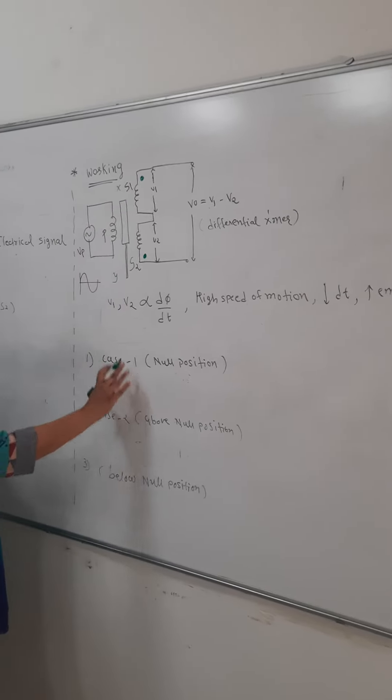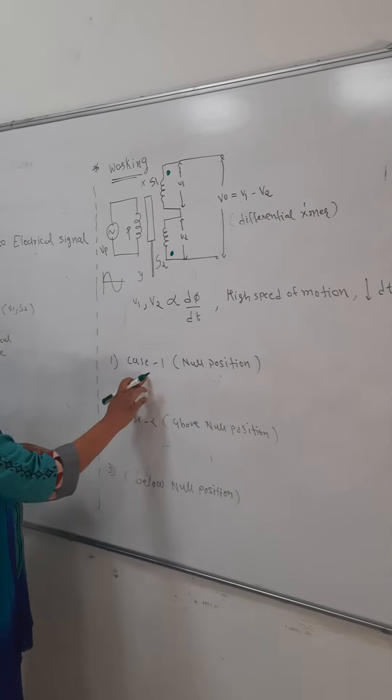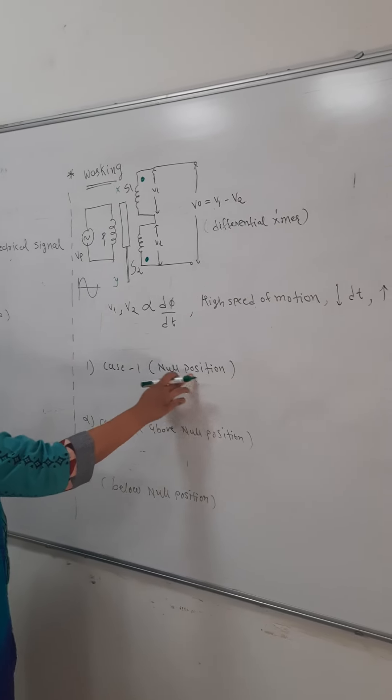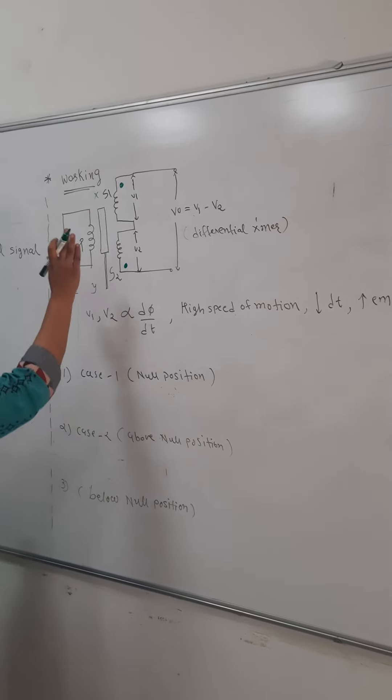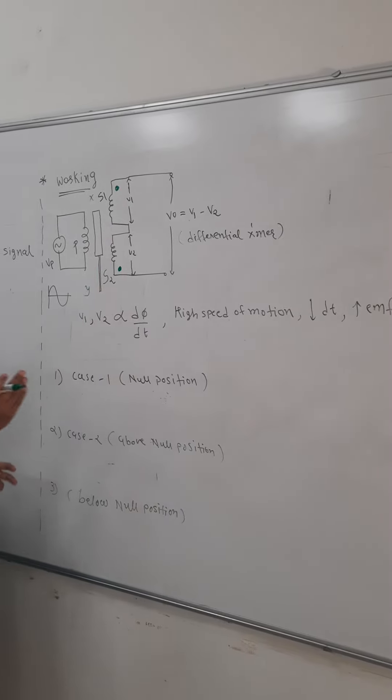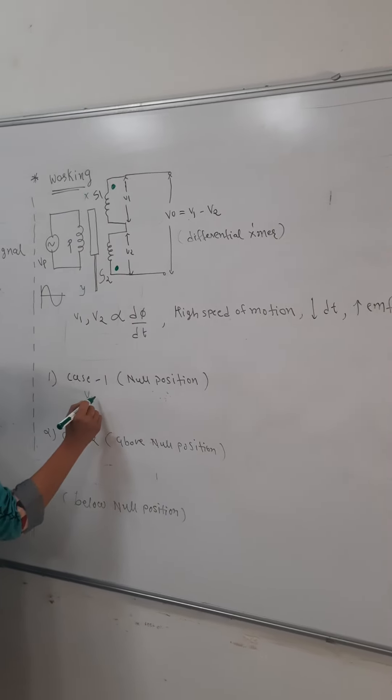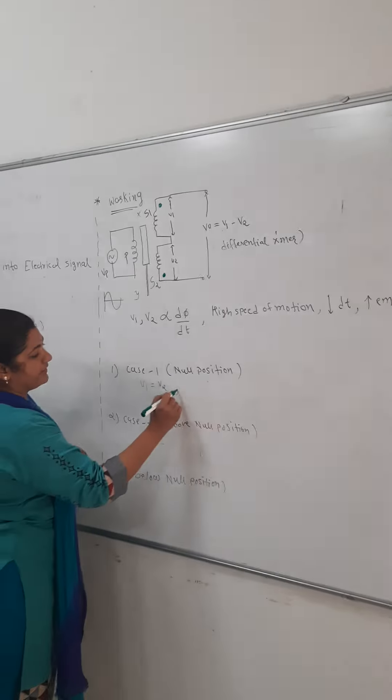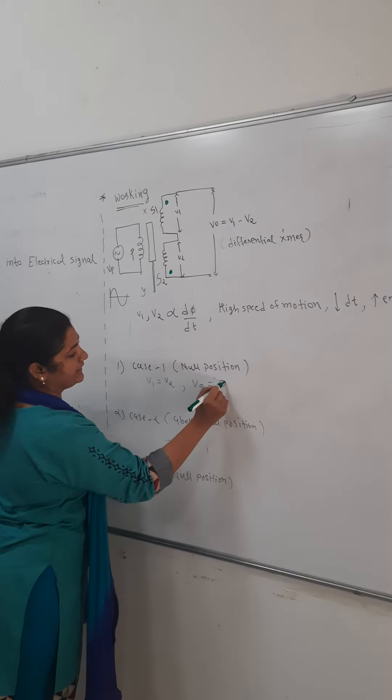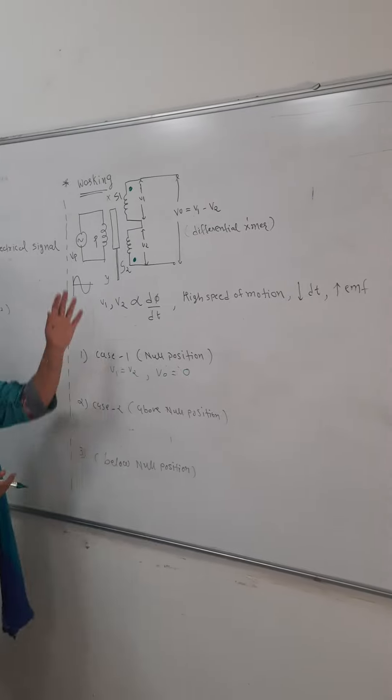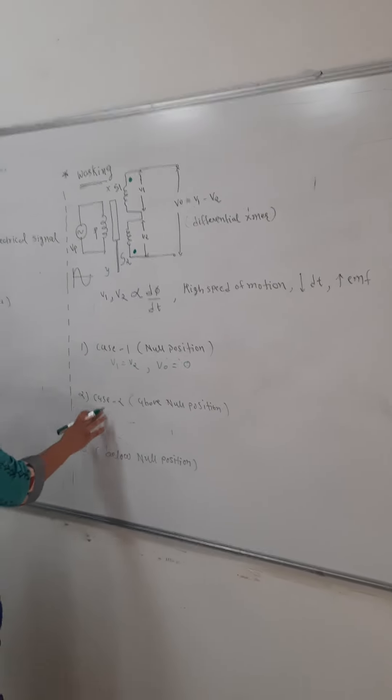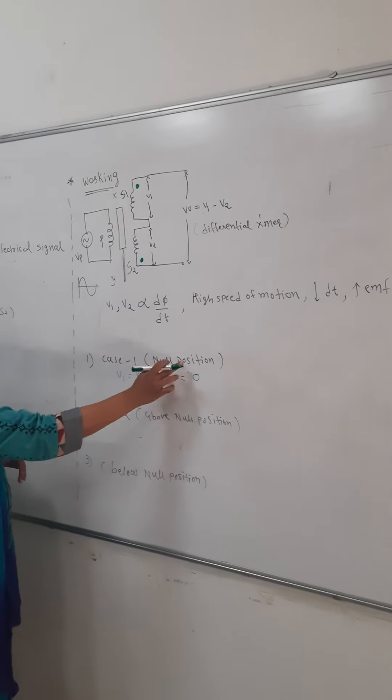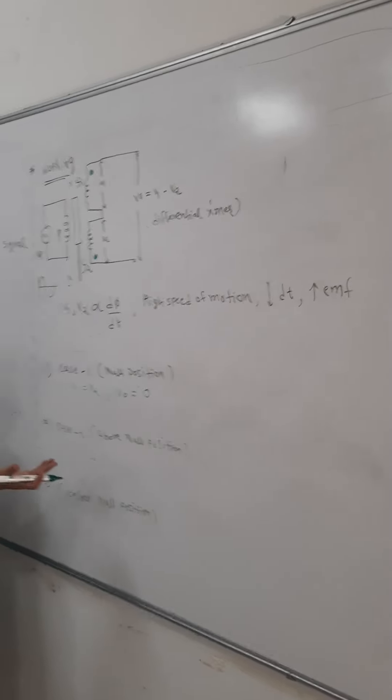Now, we will go with three different cases. First, let me consider null position. Null position means what? The core will be exactly at the center in such a way that V1 and V2 will be equal. If both are equal, means V0 will be 0. No output from the differential transformer.